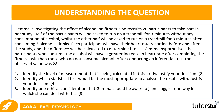Now there's a second item. Gemma is investigating the effect of alcohol on fitness. She recruits 20 participants: half will run on a treadmill for three minutes without any alcohol consumption, while the other half will run for three minutes after consuming three alcoholic drinks. Each participant will have their heart rate recorded before and after the study, and the difference will be calculated to determine fitness. Gemma hypothesizes that participants who consume alcohol will have a greater increase in heart rate than those who do not. After conducting an inferential test, the observed value is 28.